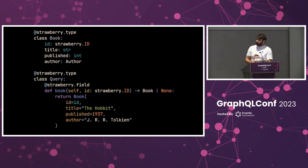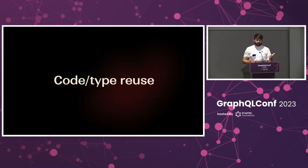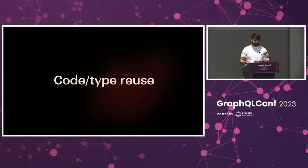The first benefit is that we have everything in one single source of truth. We don't have to touch multiple files. For example, if I want to add a new field to the Book type, I don't have to go to the SDL and then separately go to the resolver file. Inside the book method, we're also using the Book class for the return type, meaning we can click through to the definition directly without installing any third-party tools.